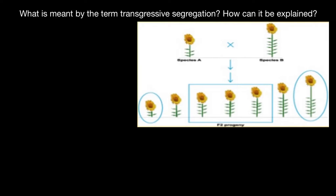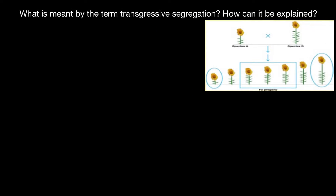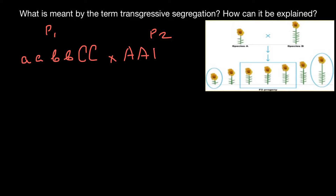This is exactly what we call transgressive segregation. To explain how it can occur, consider parent one with the genotype: small a, small a, small b, small b, and capital C, capital C. We cross this with parent two, who is of the genotype capital A, capital A, capital B, capital B, and small c, small c. Let's imagine that each recessive allele adds 1 cm to the plant height, and each dominant allele adds 10 cm.